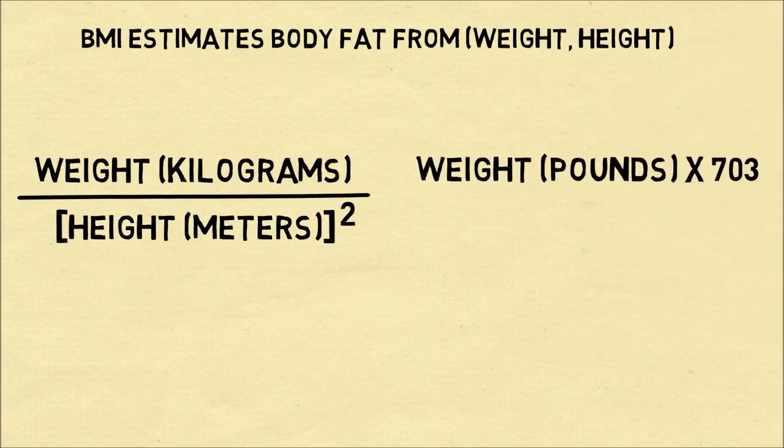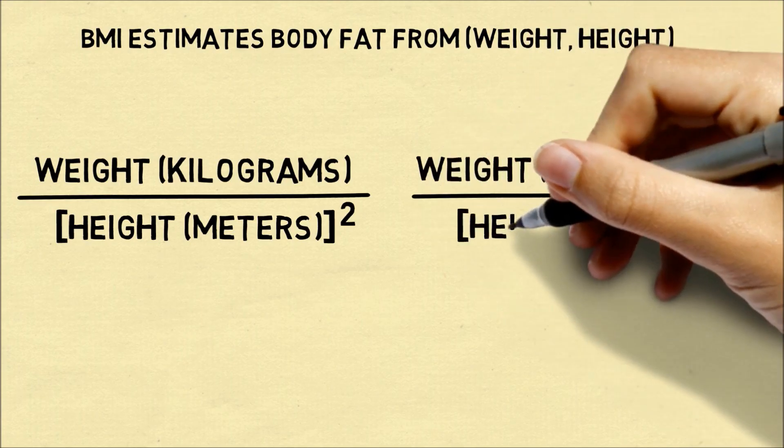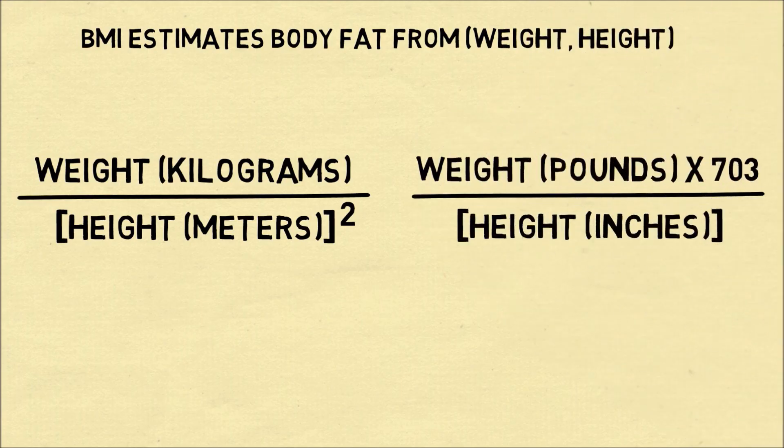The equivalent formula in pounds and inches is to take your weight in pounds, multiply by 703, and divide it by your height in inches squared.